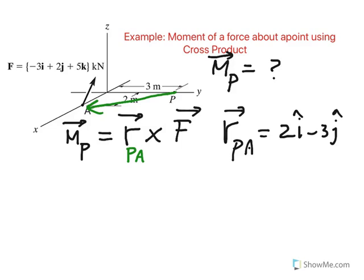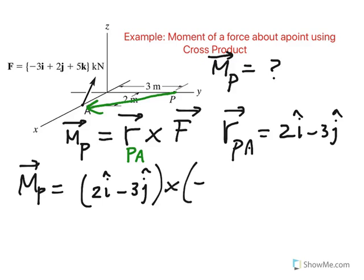So let's go ahead and find the cross product, which is simply putting the first position vector R, which is 2I minus 3J, and then cross it with the force vector F, which is minus 3I, plus 2J, plus 5K in kilonewtons.